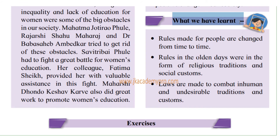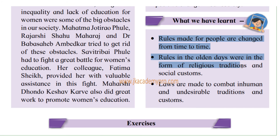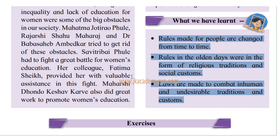Now let's revise what we have learnt in this lesson. We learnt that rules made for people are changed from time to time. As the society progresses and we move from one generation to the other, some rules become outdated — irrelevant and of no use — so we have to change them. Rules in the olden days were in the form of religious traditions and social customs. Laws are made to combat inhuman and undesirable conditions and customs, so that we work for people's good as well as for the good of the environment, protecting people's rights and the environment.